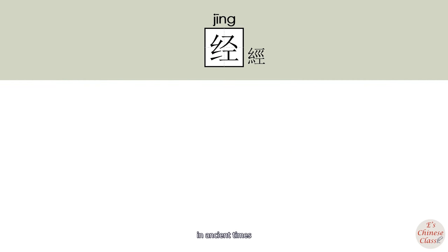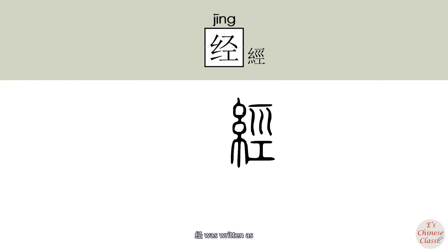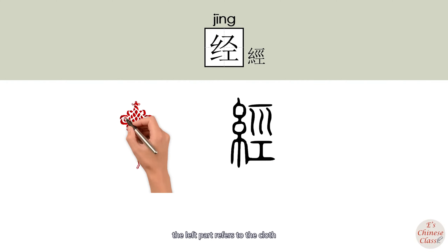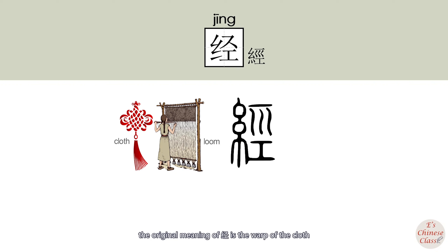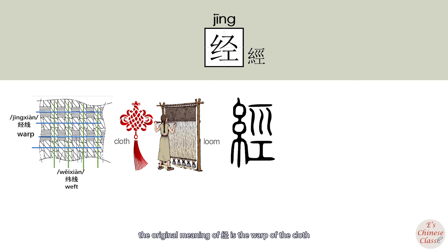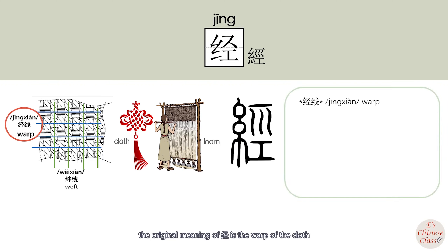In ancient times, 经 was written differently. The left part refers to the clothes, and the right part refers to a room. The original meaning of 经 is the wrap of the clothes.